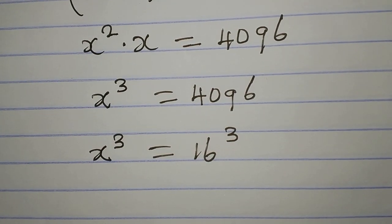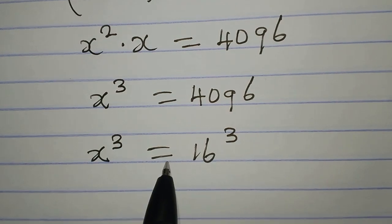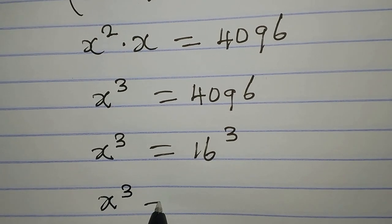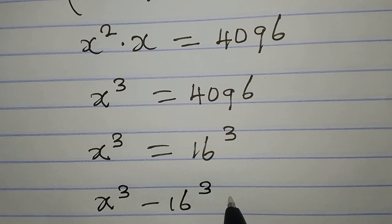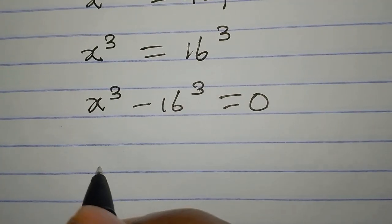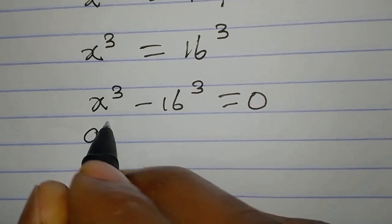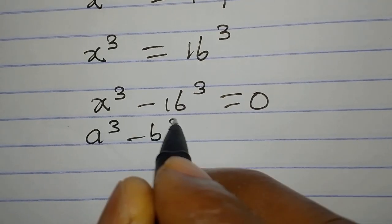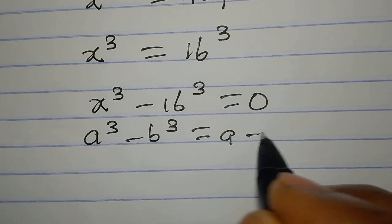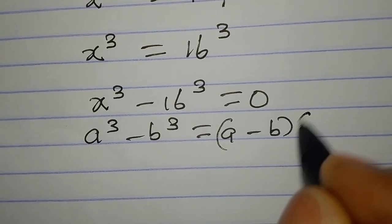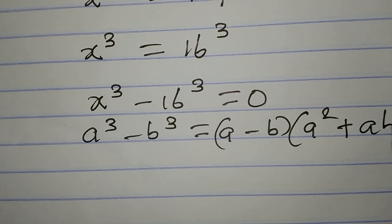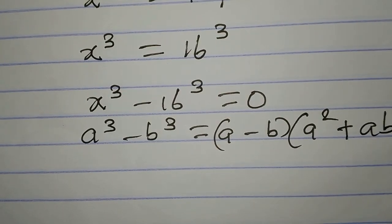We are going to get three possible solutions. So we write x to the power of 3 minus 16 to the power of 3 equals 0. Remember that a³ minus b³ equals a minus b, times the quantity a squared plus ab plus b squared.